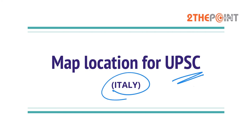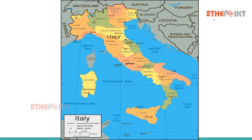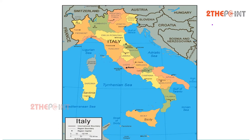Italy is a country which is most affected by the coronavirus outside China, and that is why it is important to know the geographical location of Italy. Italy is officially called the Italian Republic.